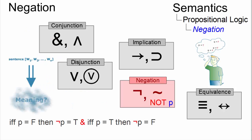Thus, negation is interpreted intuitively as being true when P is false, and false when P is true.